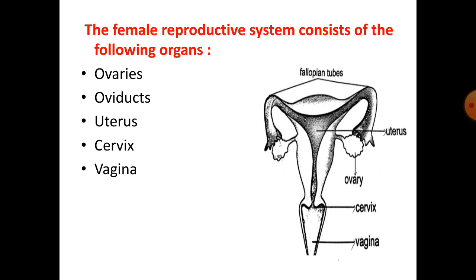You can see here in this picture that there are two ovaries present — that is why I said a pair of ovaries. The uterus has been shown, as well as the fallopian tube which is also called the oviduct, cervix, and vagina.